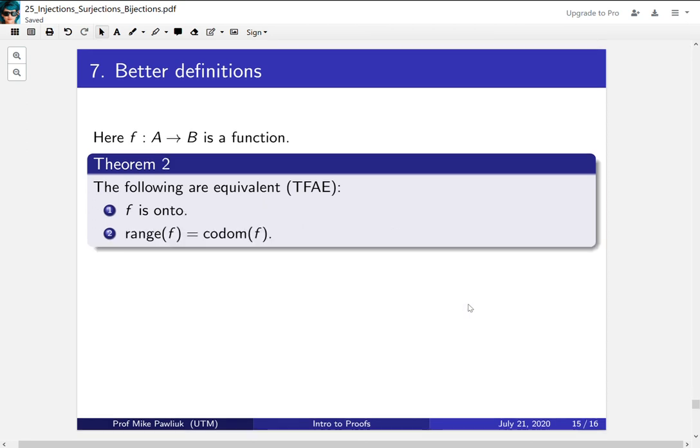Now let's look at a better definition for onto or surjective. The following are equivalent. f is onto. The range of f is equal to the codomain of f. So this is how we usually think about what it means to be onto. In fact, this is what we looked at earlier in the course.